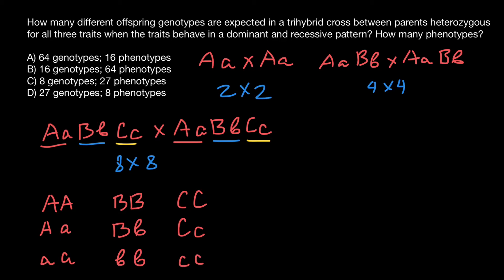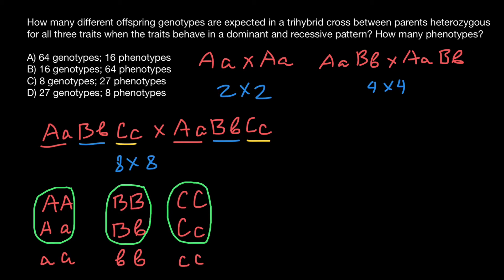Now take a look. The homozygous dominant and heterozygous genotypes both produce one phenotype — the dominant phenotype — because we have simple Mendelian genetics and simple dominance. The heterozygous genotype makes the same phenotype as the homozygous dominant. The other phenotype is the homozygous recessive. So for each allelic pair — gene A, B, and C — how many different phenotypes do we have for gene A? Just two.